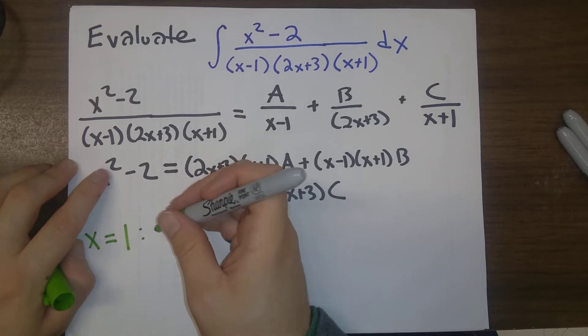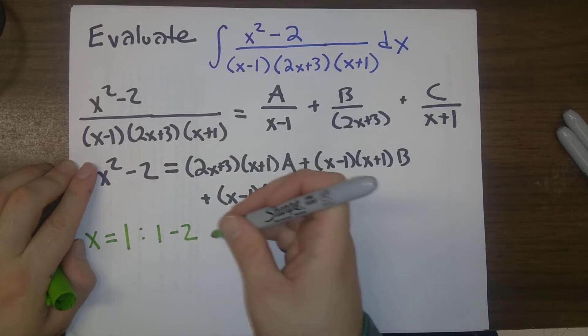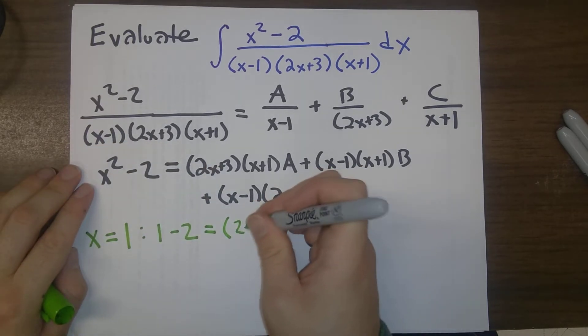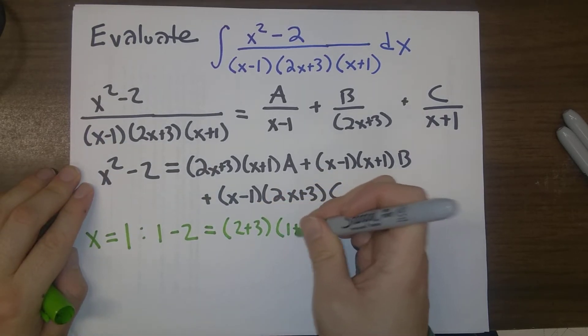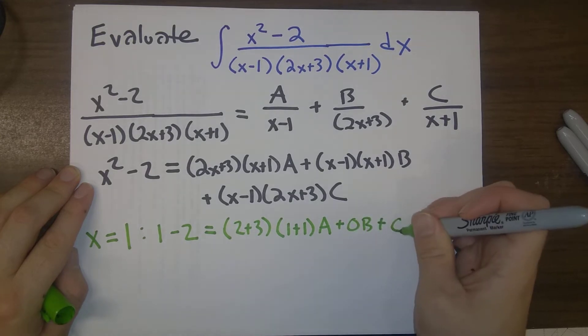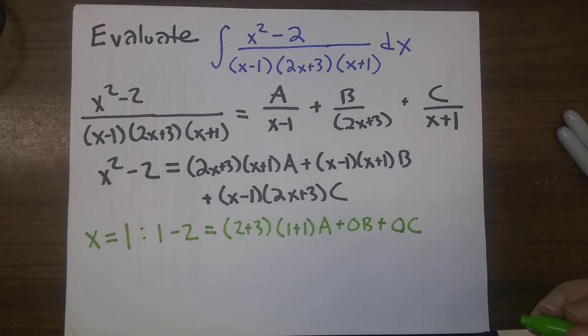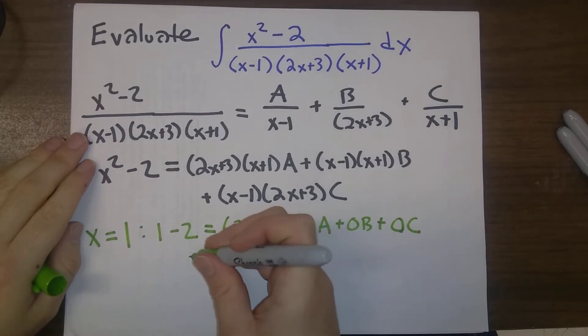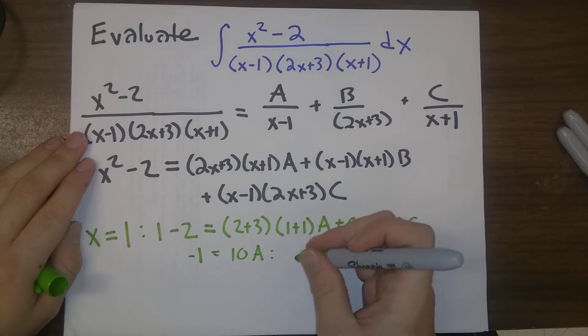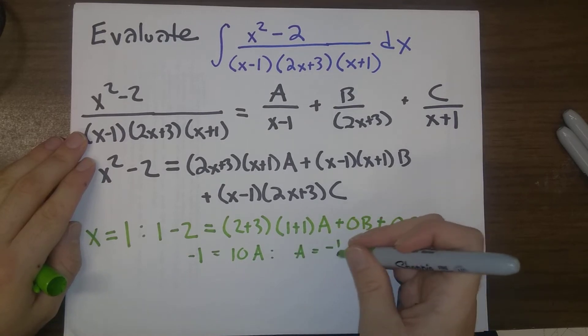So, we get 1 squared minus 2 is equal to 2 times 1 plus 3 times 1 plus 1 times A plus 0B plus 0C. And so, this ends up as minus 1 is equal to 10 times A. So, A is equal to minus 1 tenth.